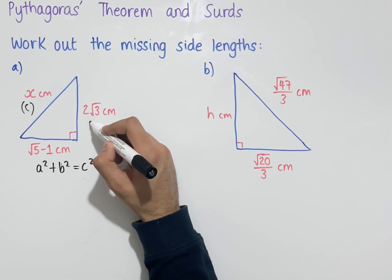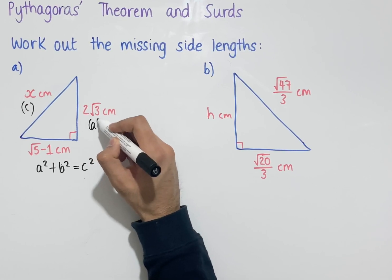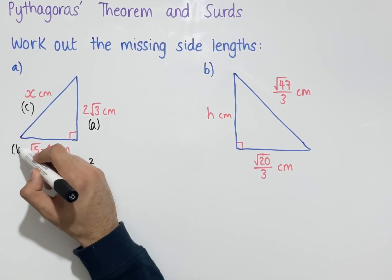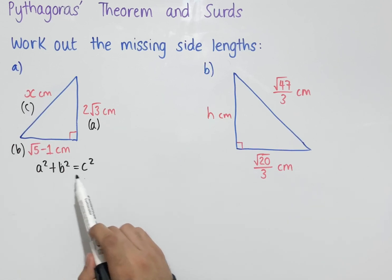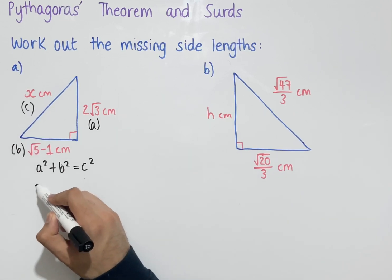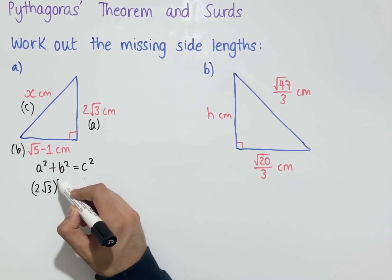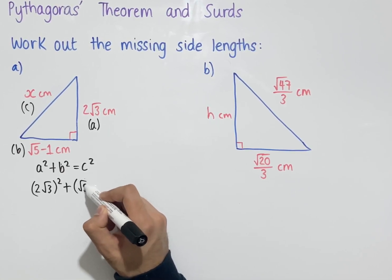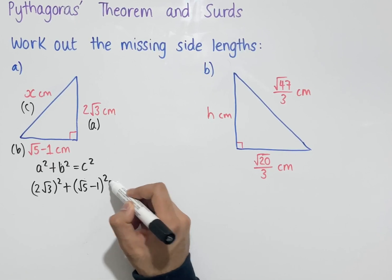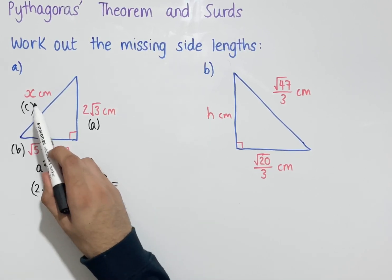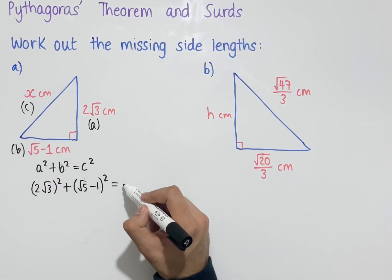We'll label 2√3 as a and √5 − 1 as b. Substituting into Pythagoras' theorem, we have (2√3)² + (√5 − 1)² = c², which in this case is x².